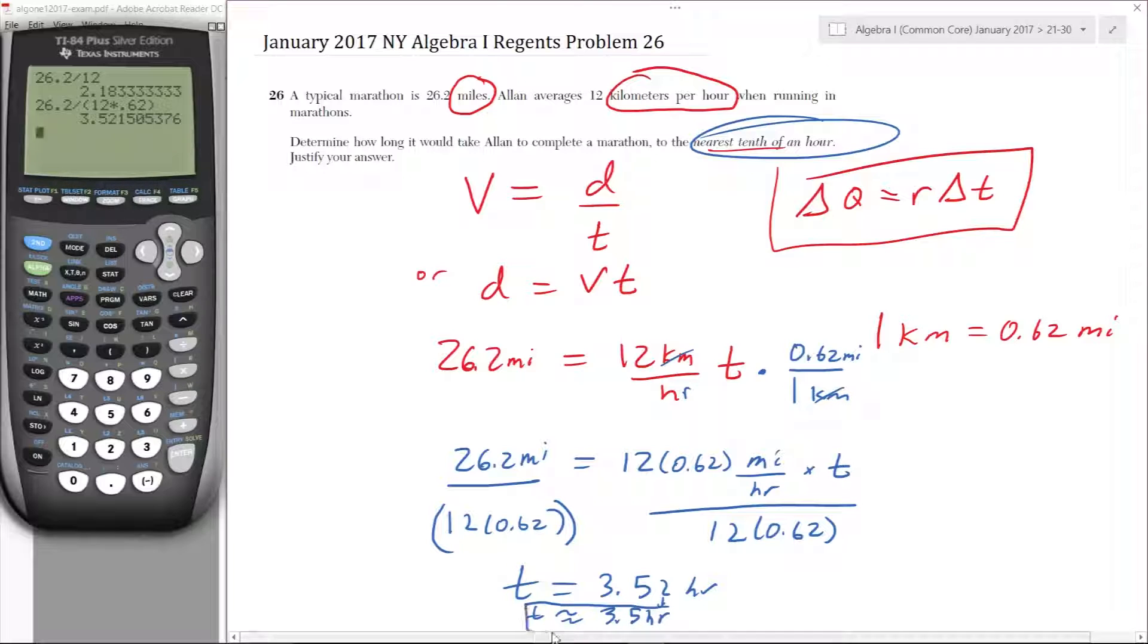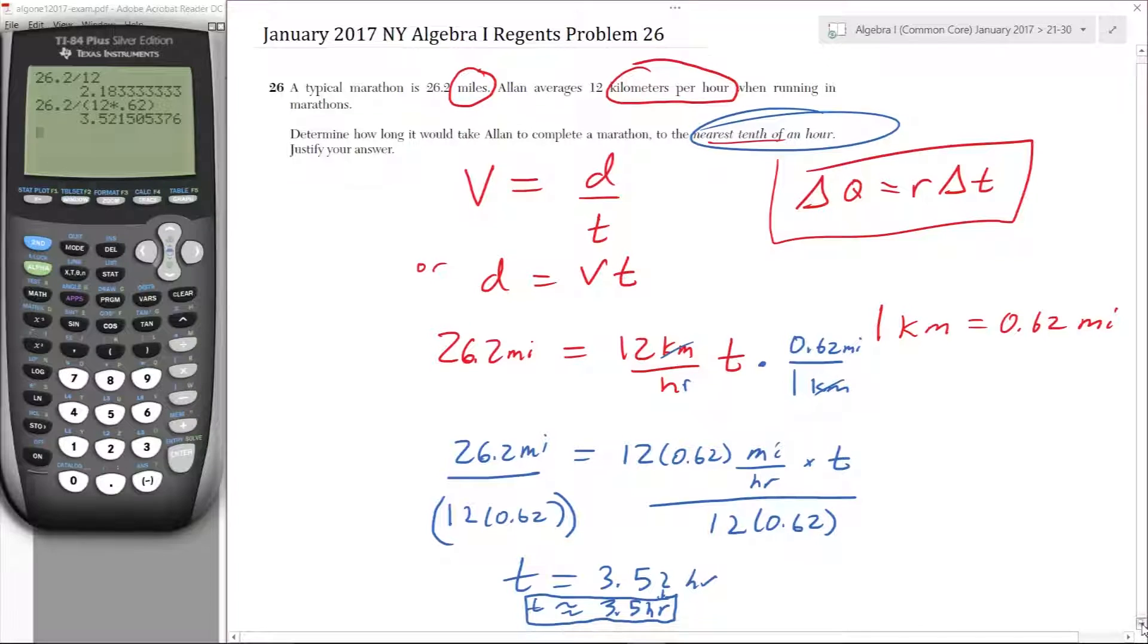And there we go. Which is actually a pretty impressive time. But it's not elite runner time. Elite runners all the way at the top are running just above two hours, both for men and women. For us regular people, 3.5 hours is actually pretty impressive.